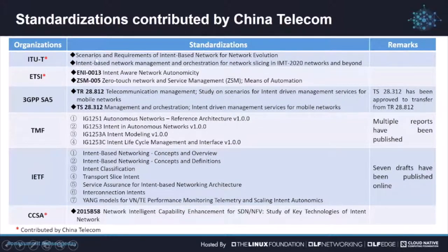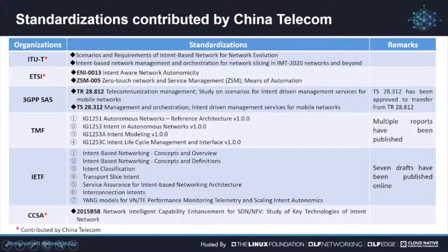For example, in ITU-T, China Telecom has led standardization work on scenarios and requirements of intent-based network for network evolution. The second standardization work on network management and orchestration for network slicing in IMT-2020 networks and beyond is led by China Mobile, and China Telecom also cooperated on these. In ETSI, there's ENI-013 on intent-aware network automation, led by China Telecom, and we also cooperated with Huawei on ETSI ZSM. The 3GPP and TMF works are led by Huawei and China Mobile, and there are also some drafts published in IETF. There is also a standardization led by China Telecom in CCSA.